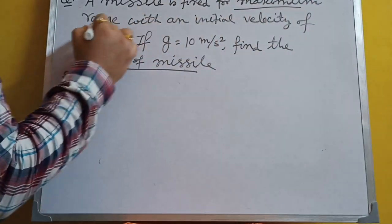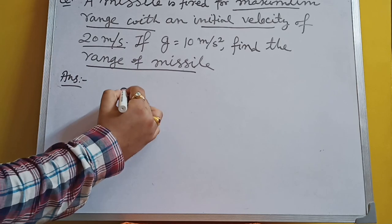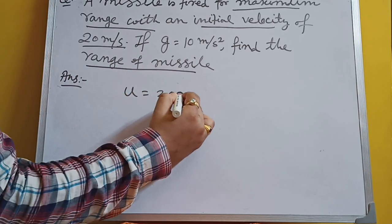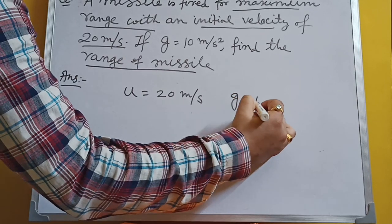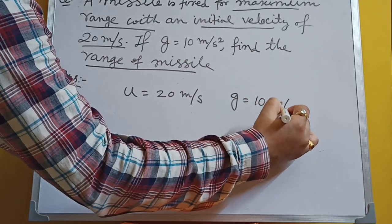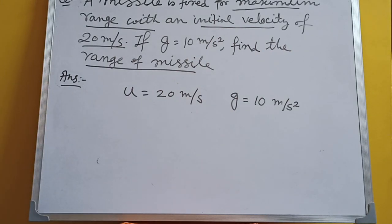This is maximum range with initial velocity of 20. So U is equal to 20 m per second. What is G? Acceleration due to gravity is 10 m per second square.